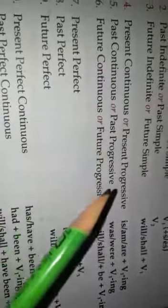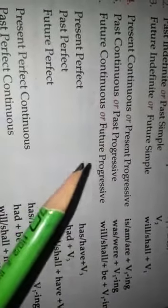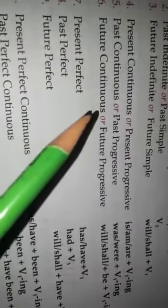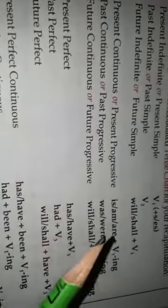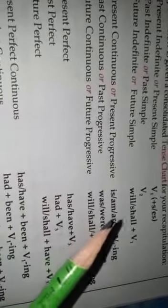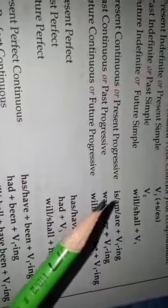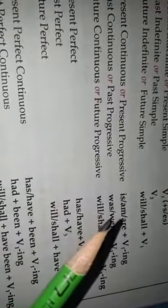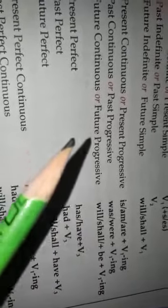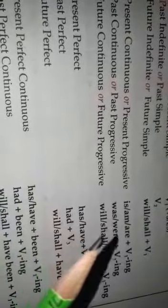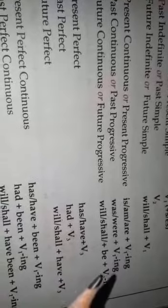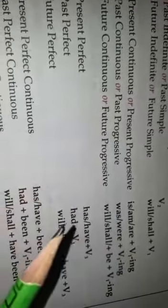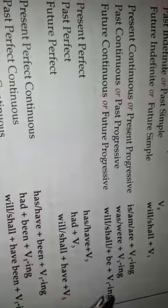All present progressive, past progressive, and future progressive — meaning present continuous, past continuous, future continuous — also have a chart. For present continuous: am/is/are plus verb 1 plus ing. For past continuous: was/were plus verb 1 plus ing. For future continuous: will/shall plus be plus verb 1 plus ing.